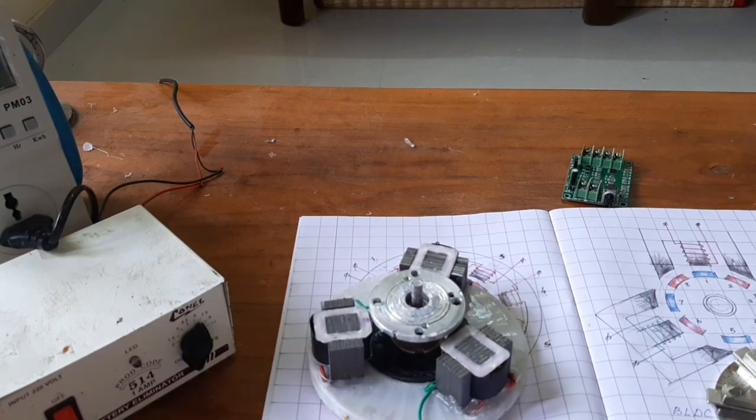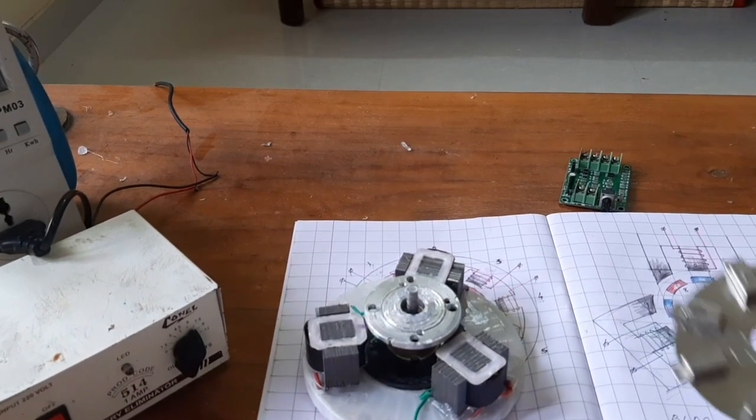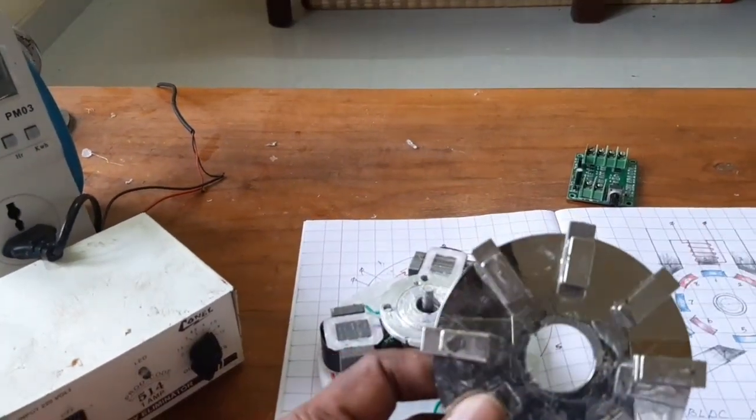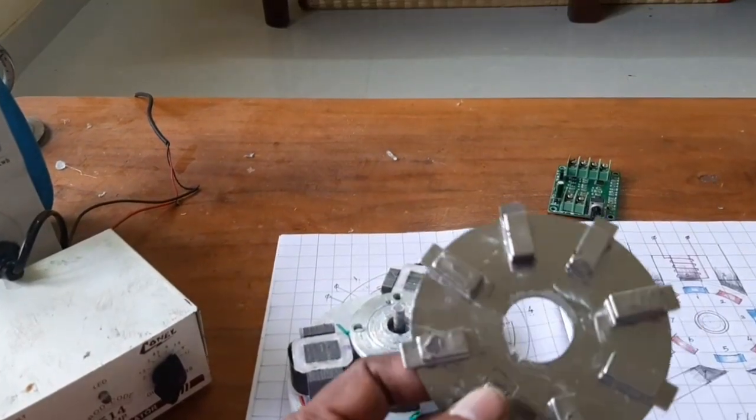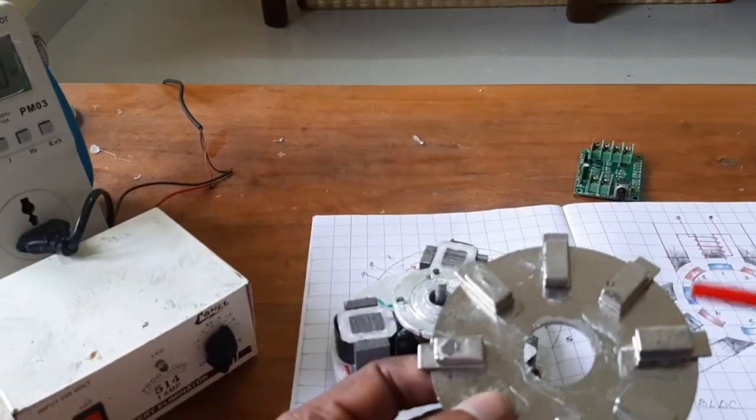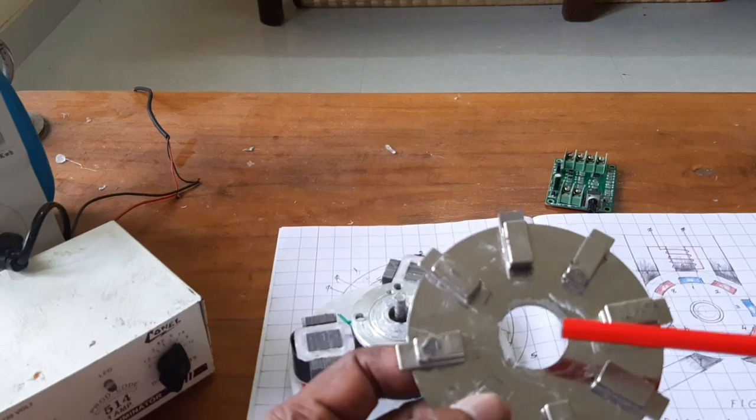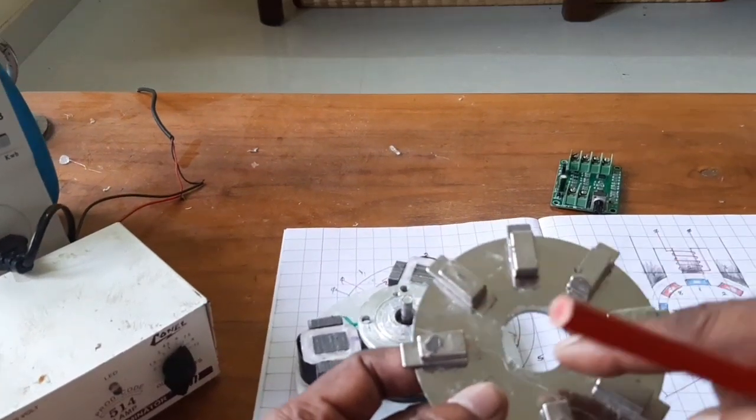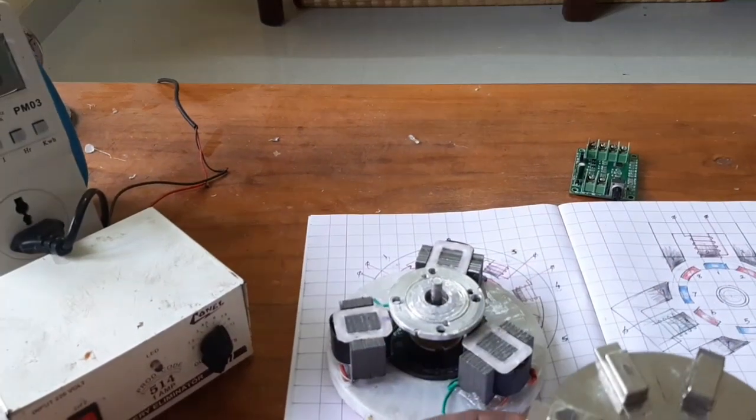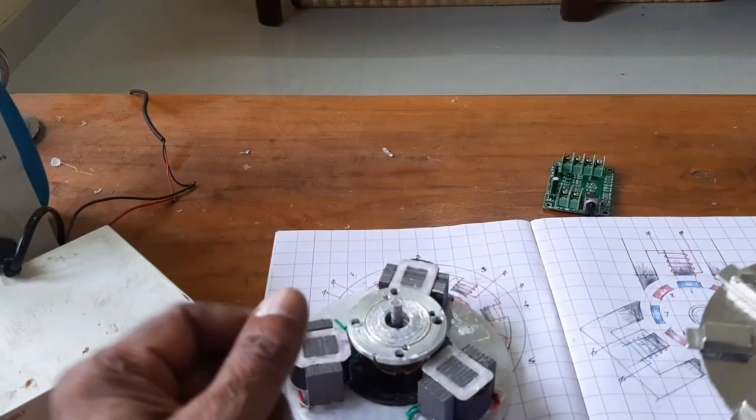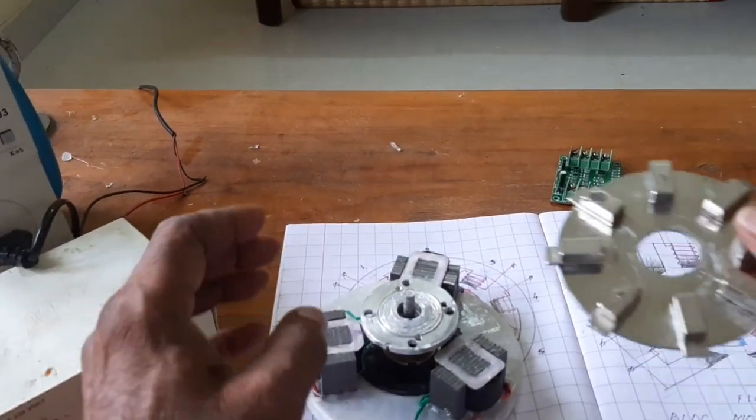Now look at the rotor. This is the eight-pole rotor. Here, this is a hard disk and eight neodymium magnets are provided facing at equal distance. Now I'm going to fix the rotor.